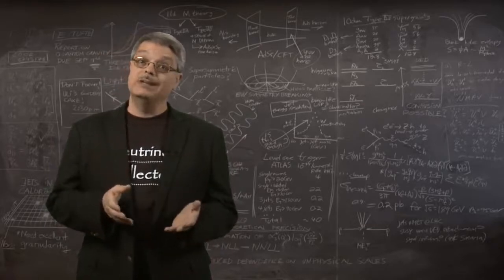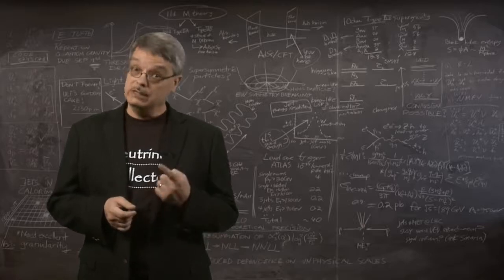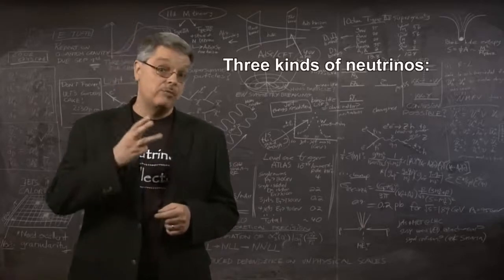For instance, while the original idea of neutrinos supposed that there was only a single kind of neutrino, it turns out that there are actually three distinct variants.